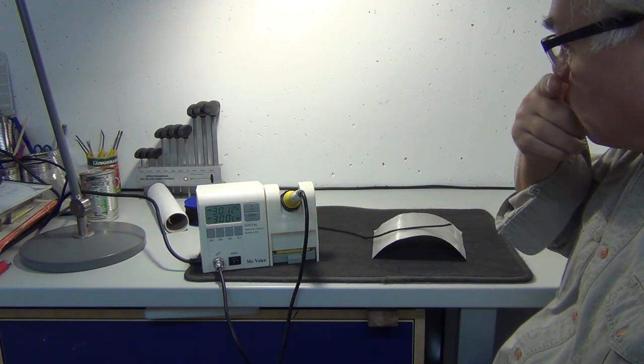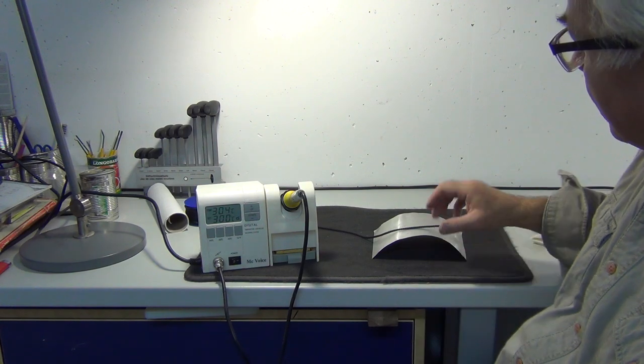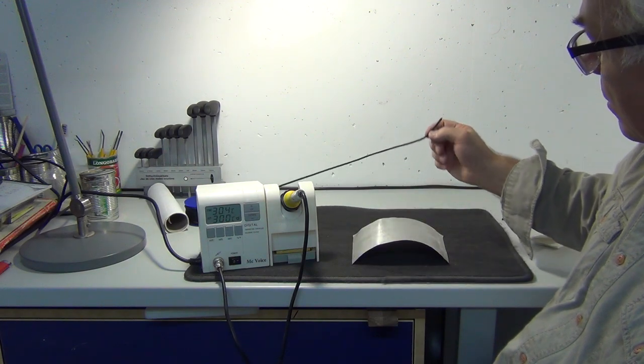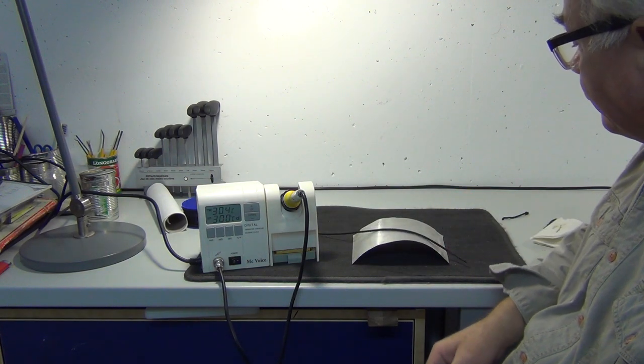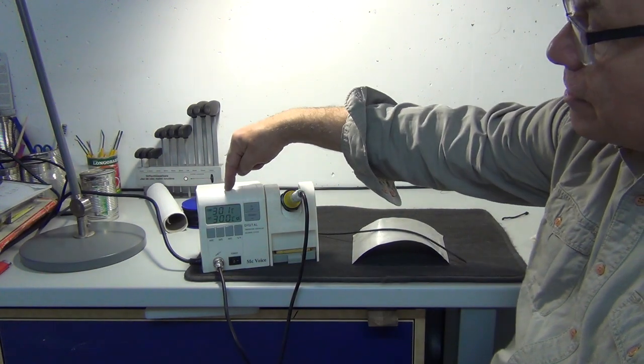But what I thought was, let's find out the temperature at which it melts. So here I've got a bit of a heat shield of aluminum, I've got my paracord, and I've got a temperature controlled soldering iron.